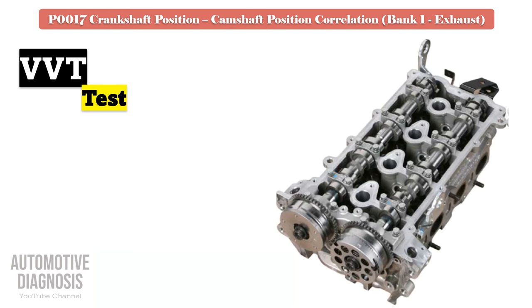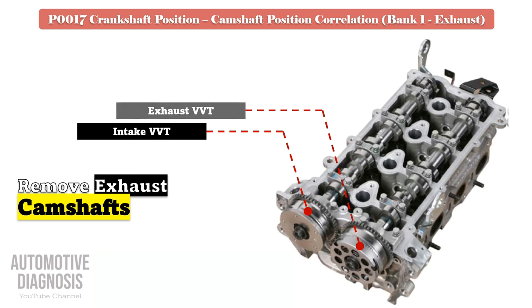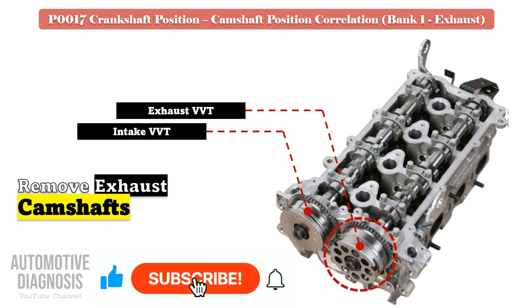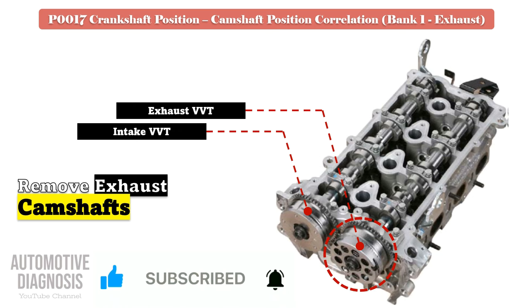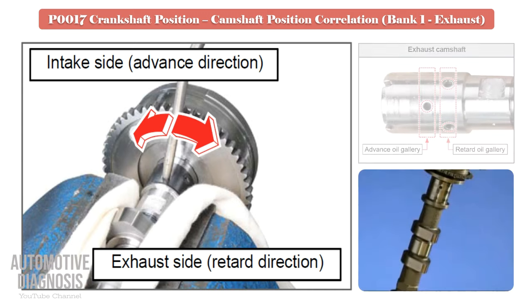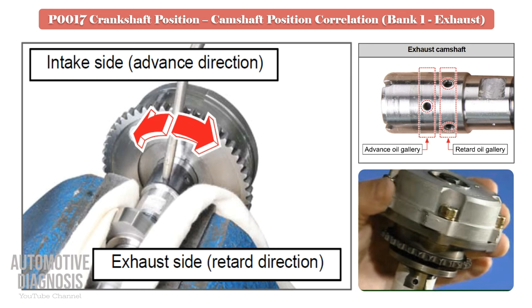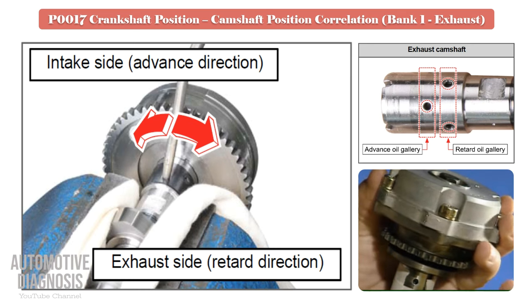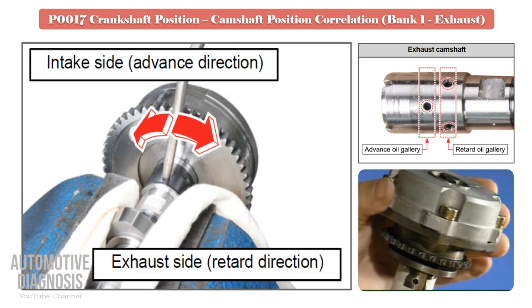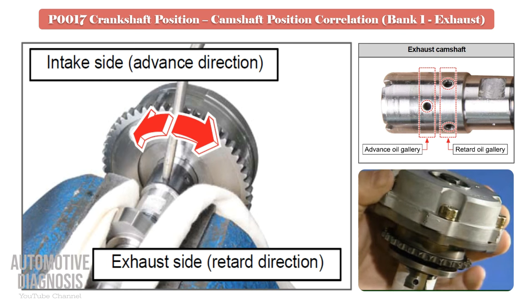For testing the exhaust VVT, remove the exhaust camshaft and locate the advance and retard oil passages on the camshaft. Test the exhaust VVT by providing compressed air into the relevant oil galleries. When you provide air into the retard oil gallery, the VVT should rotate, as the exhaust VVT is locked at maximum advance. Before providing compressed air into the retard oil gallery, make sure that the VVT is locked and does not rotate. If the VVT fails this test, it must be replaced.